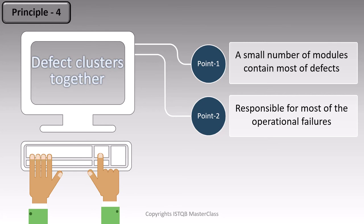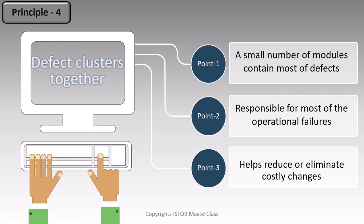Operational failure is when the product is in use and fails to perform according to expectations. So if we can identify the module or part of the software that contains these defects, it will help us reduce or eliminate costly changes. If we find them during testing, they won't crop up during live use, and we can save the expenses on correcting them. So that's the fourth principle: identify the module where most of the defects are clustered together.